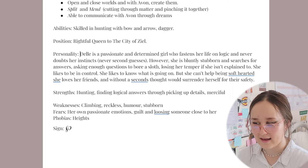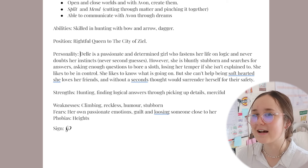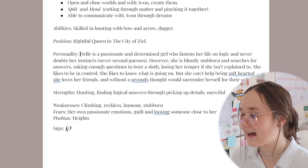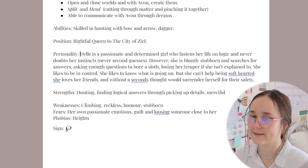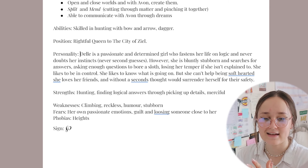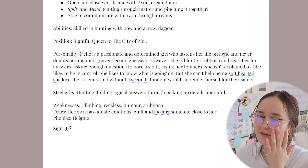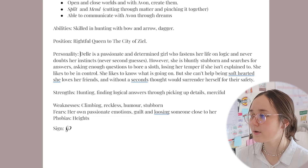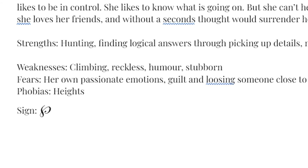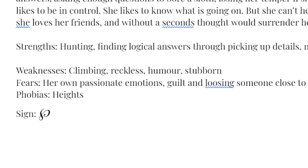Then down below, we have phobias. Her phobia is actually heights, even though she's a hunter — she hates heights. These are fun, really funny things that I think just make her a character. It's just a work in progress. You're going to add new things and edit your document as you go. But the character profile practically is set in stone, and if you do get new ideas, you just add them. And then this is her sign — it kind of looks like a D. That's her sign that I use to show readers that that's her chapter.